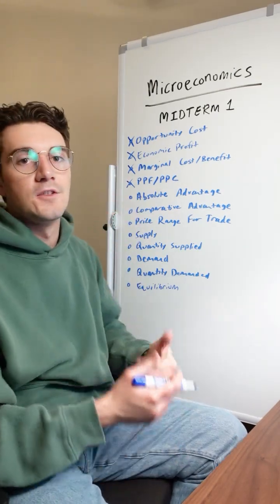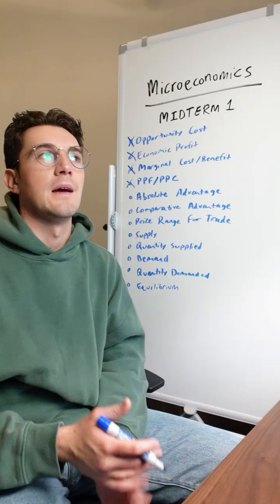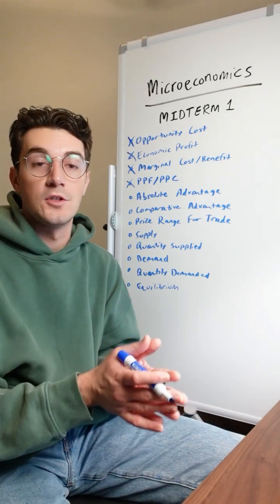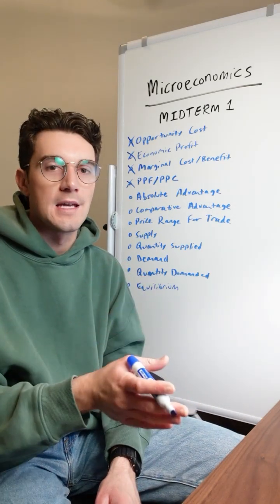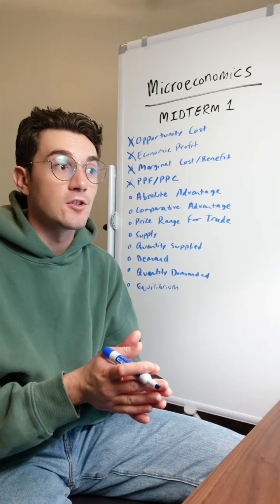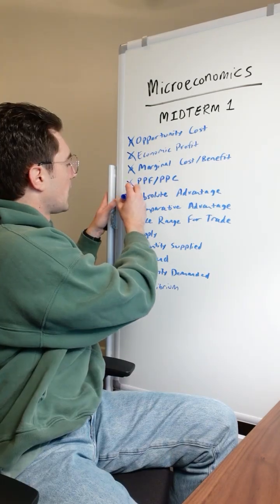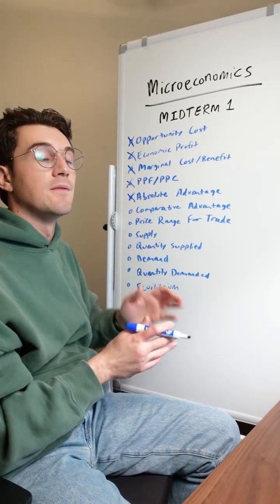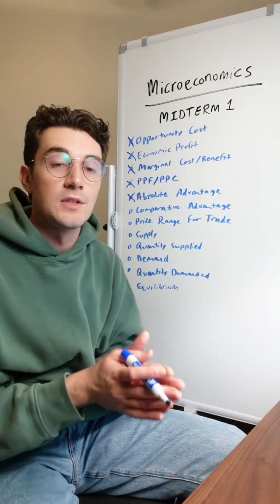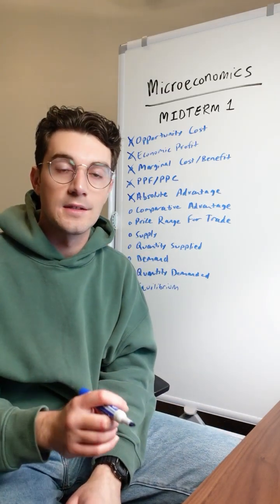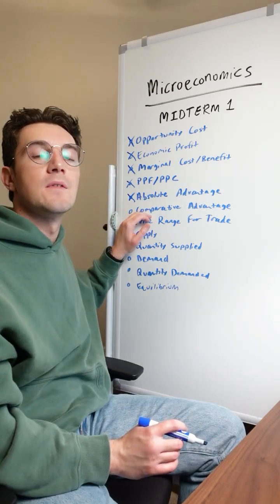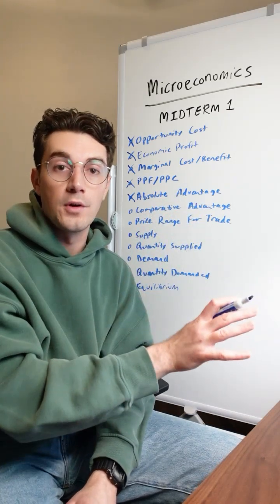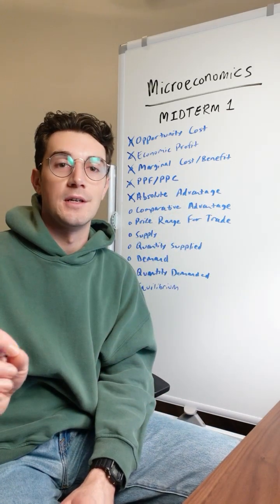Next up: absolute advantage. These types of problems will have two parties with two goods and their output for each. A party has the absolute advantage in a good if they can simply produce more outright, whereas a party has the comparative advantage in a good if they can produce it at a lower opportunity cost. With comparative advantage, it's guaranteed that one party will have it for one good and the other party for the other good.